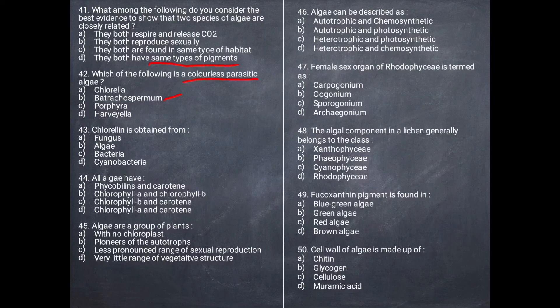Next question: Chlorellin is obtained from which organism? Chlorellin is an antibiotic found in algae.